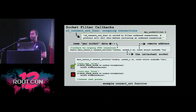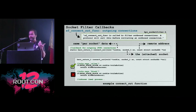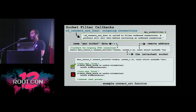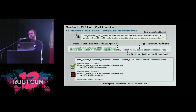Next we have the connect-out callback, which is invoked when a socket attempts to connect out and send data. This function takes the same cookie parameter with the stored action. If the action is allow, we return an OK status telling the OS to allow the connection. If it's a socket connection we want to block, we return an error code, causing the OS to drop the connection. If it's a new or unknown process, we put the kernel thread to sleep and ask a user-mode daemon to handle the request.